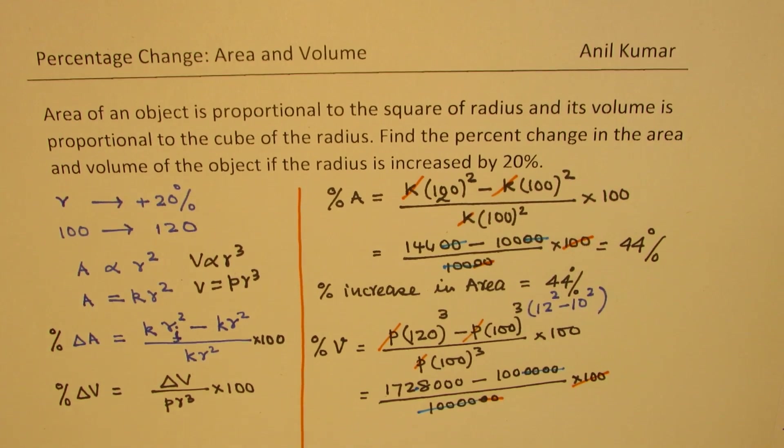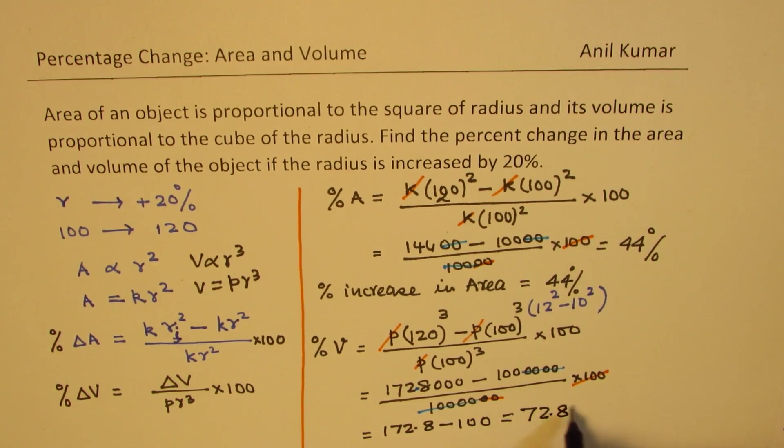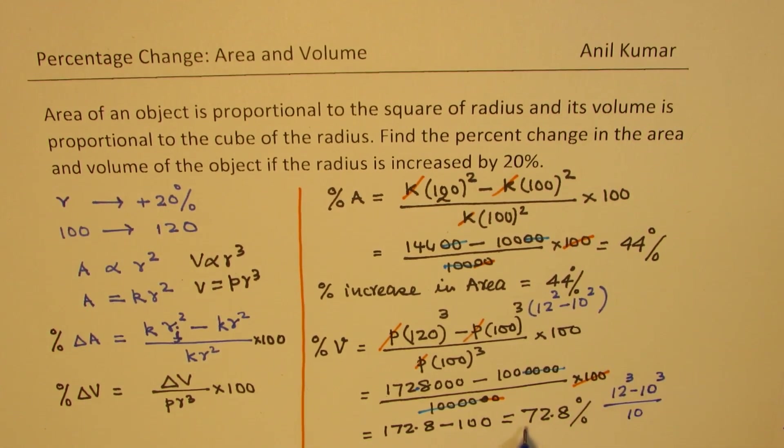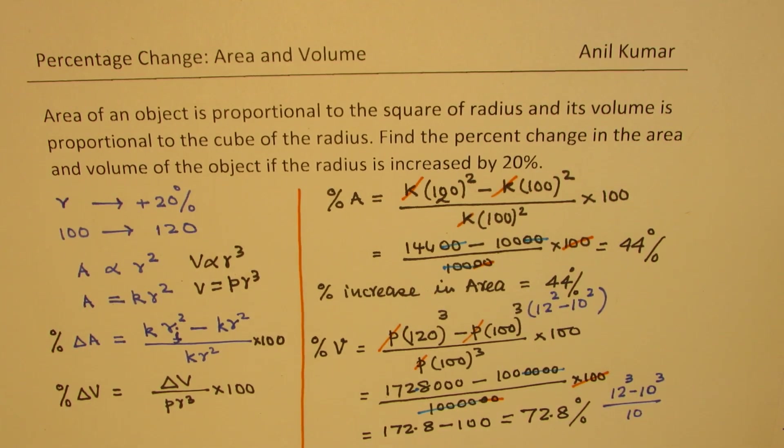Basically, I'm left with a value which is 172.8 minus 100. And that gives you 72.8%. Does it make sense to you? Now a shortcut here will be 12 cube minus 10 cube. Since we were talking about cube, I have to divide this by 10. I have to divide this by 10 to get the answer in percent. So 72.8%. So that gives you an idea. So that is how you can actually solve this question.